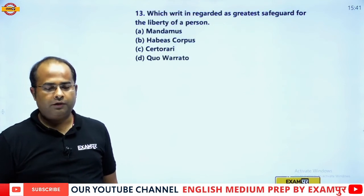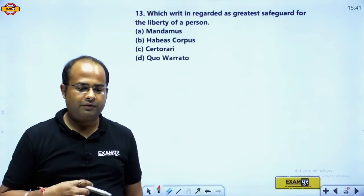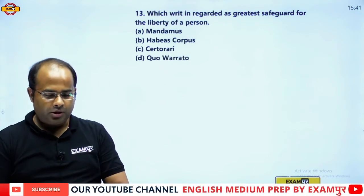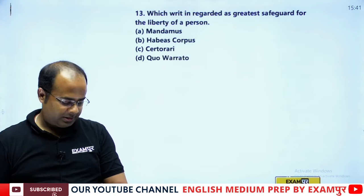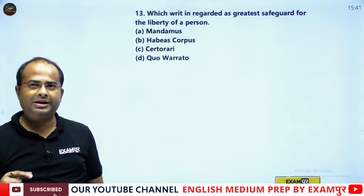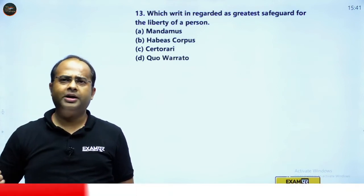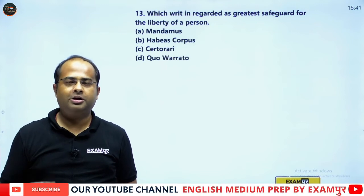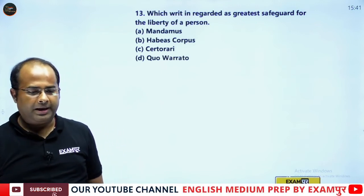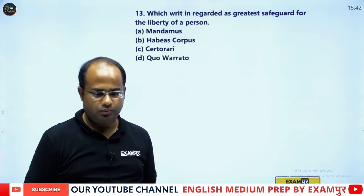The next question: which of the following writs is regarded as the greatest safeguard for the liberty of a person? Is it Mandamus, Habeas Corpus, Certiorari, or Quo Warranto?